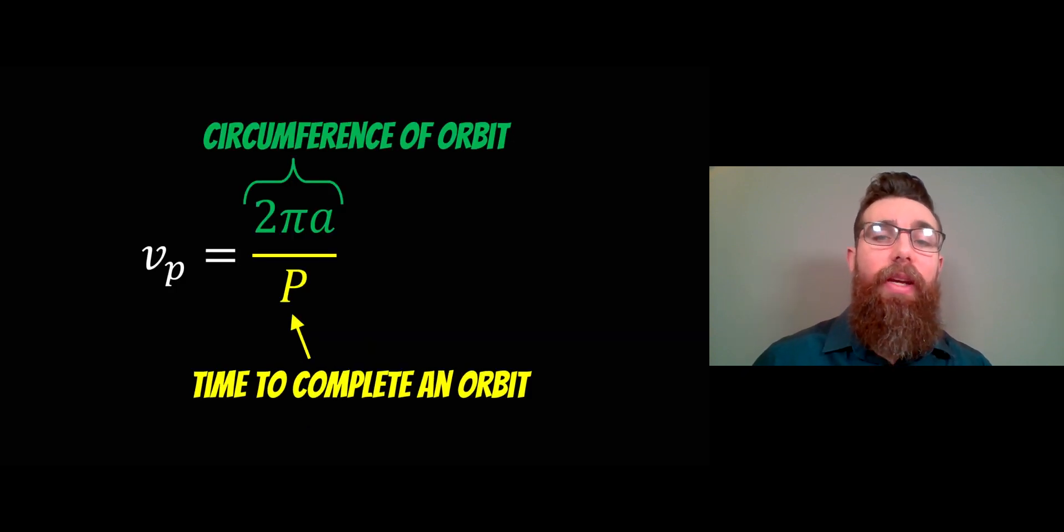Now once we've found a, we can then get the circumference of the orbit. We know the orbital period P, and we can work out the orbital velocity of the exoplanet. Now this assumes that it's circular. If it's not circular and it's elliptical, then this isn't going to be the orbital velocity. This is a rough approximation on how we might do it.